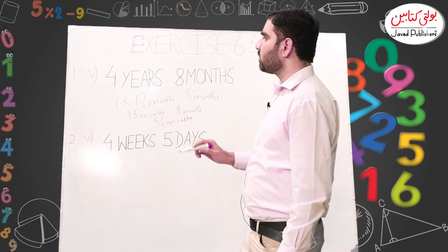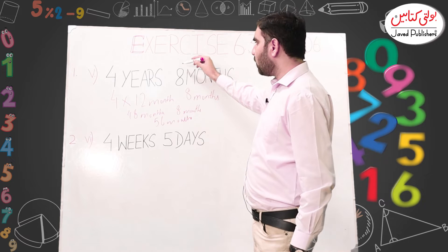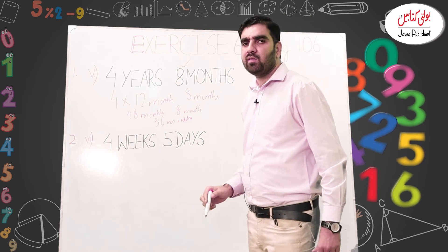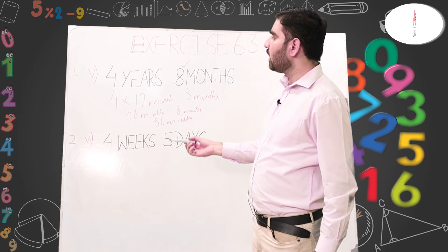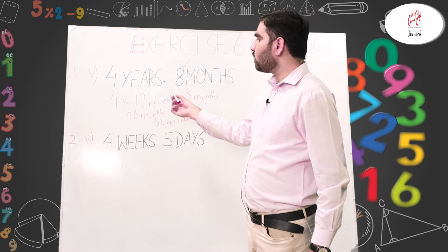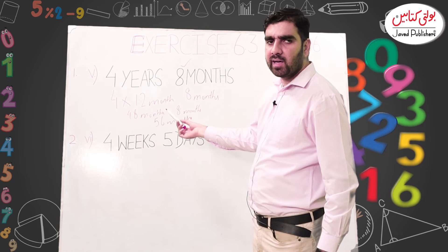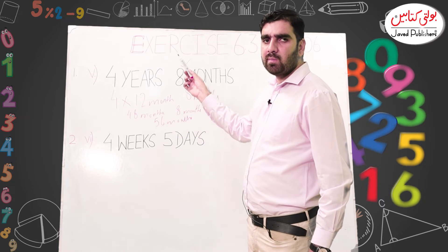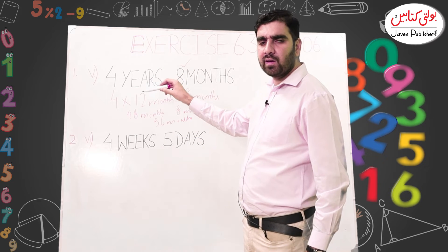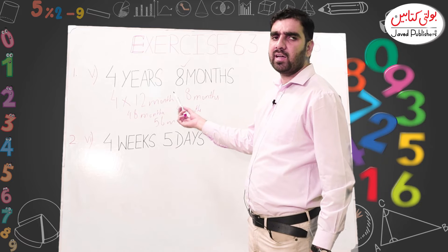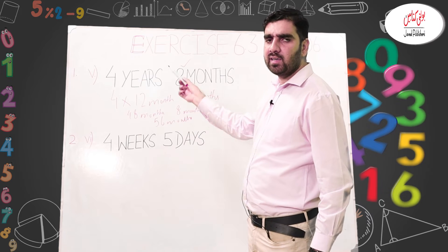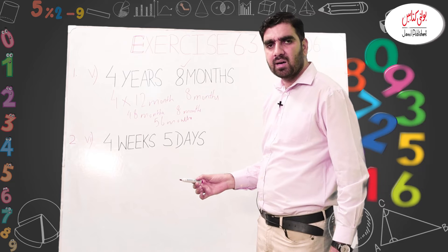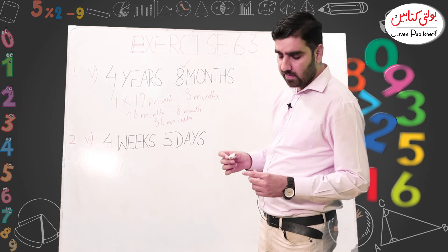We had years and months to convert. The months value was already in months, so we left it as is. The years value we converted by multiplying by 12 — because one year is 12 months, whatever value we are given in years, we multiply it by 12 to convert it into months. In the same way, students should solve all the remaining parts of this question.